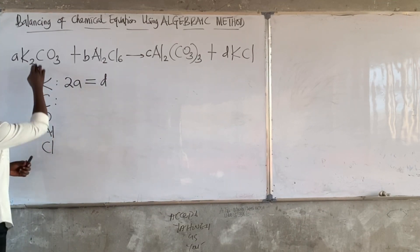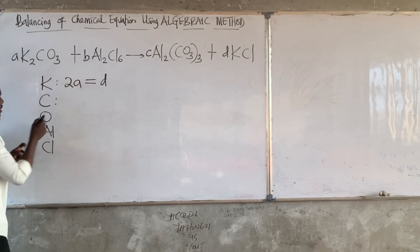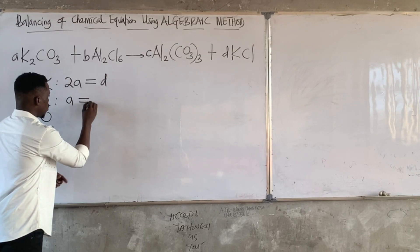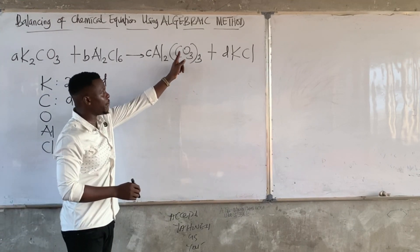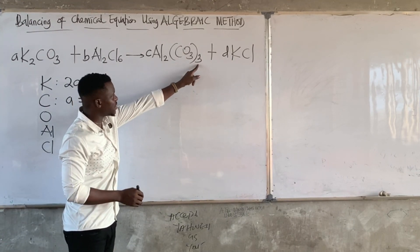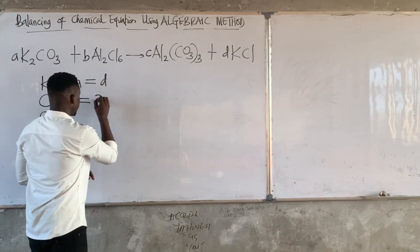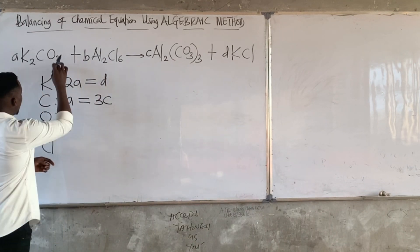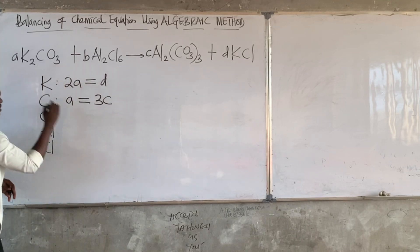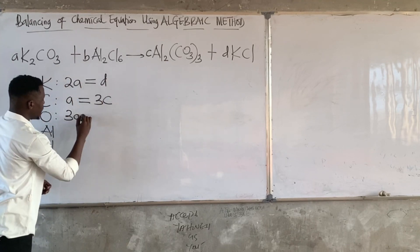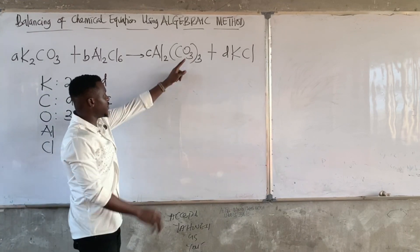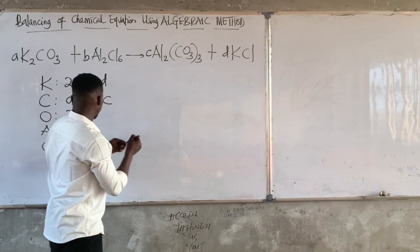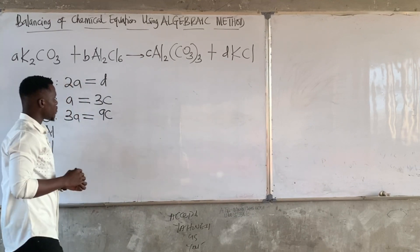For carbon: carbon is 1 here, so 1 times A is A. There is no carbon here, so moving to the right-hand side — carbon is inside the brackets: 1 times 3 is 3, and 3 times C is 3C. So A = 3C. For oxygen: oxygen is 3 here, so 3 times A is 3A. On the right-hand side there are 3 oxygens inside the brackets times C outside giving 9, so 3A = 9C.